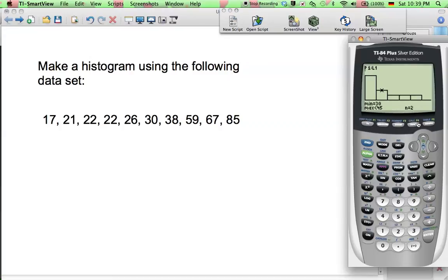So we have two values between 30 and 45, and one value in each of these three bins. That's how you make a histogram on a graphing calculator.